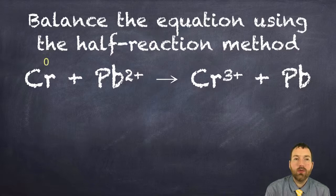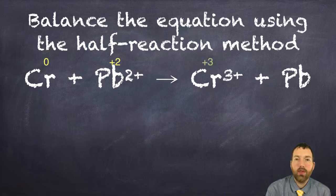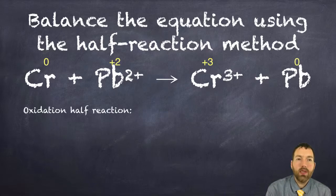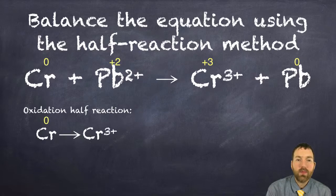Chromium gets a zero, lead two gets a plus two oxidation number, chromium three gets a plus three. Sum equals its charge. And lead gets a zero as well. It looks like chromium was oxidized as it went from zero to three plus.